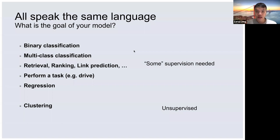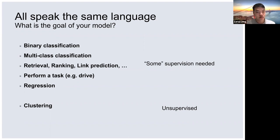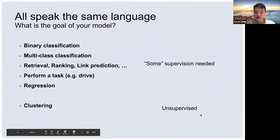Nowadays, some problems are supervised and some are unsupervised. Supervised means the data has a label — when we do training, we label the data as one or zero, so we write it down to train our algorithm. Unsupervised is when we got the data to train but we don't have a label on each example. Those are unsupervised.